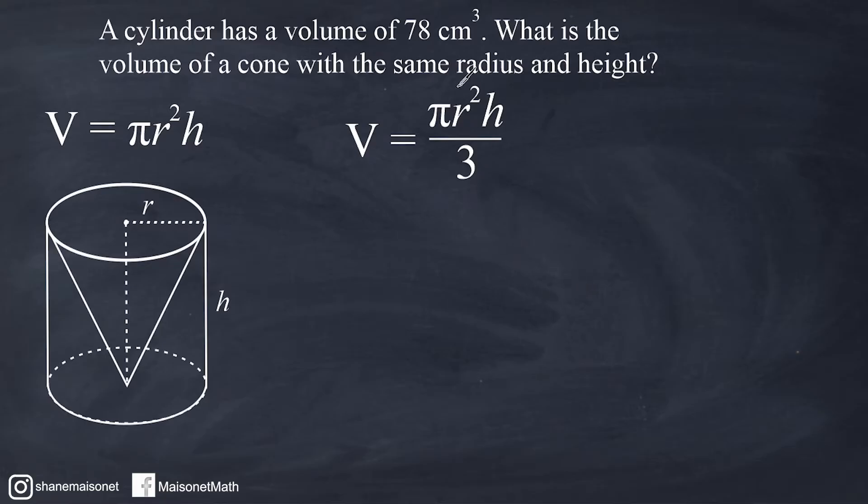If the volume of our cylinder is 78 cubic centimeters, that means everything on the top of this formula is going to be 78. Then we just take that and divide it by 3, which equals 26 cubic centimeters. Notice this problem didn't actually give us the radius length or the height of either object. But what we do know is that the total volume of the cylinder is 78. So if I solve everything for the numerator, that would give us 78, and then we divide by 3 to get the volume of our cone.